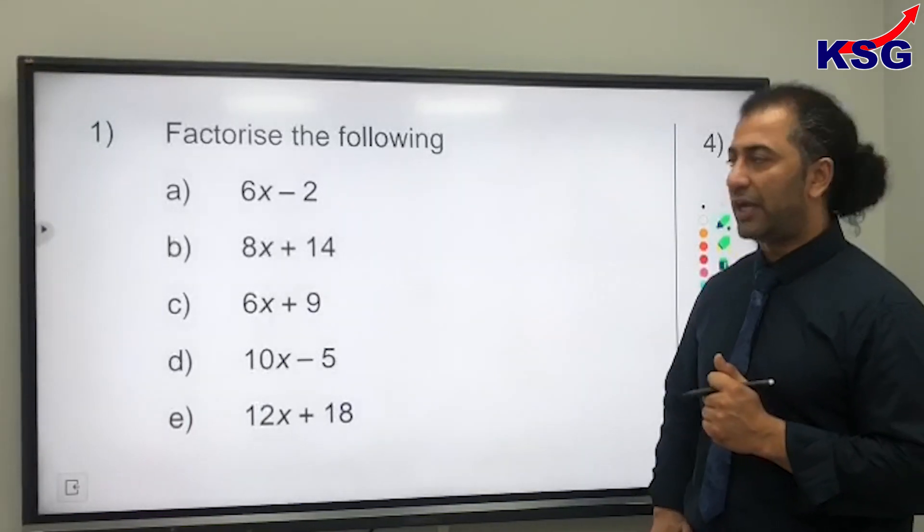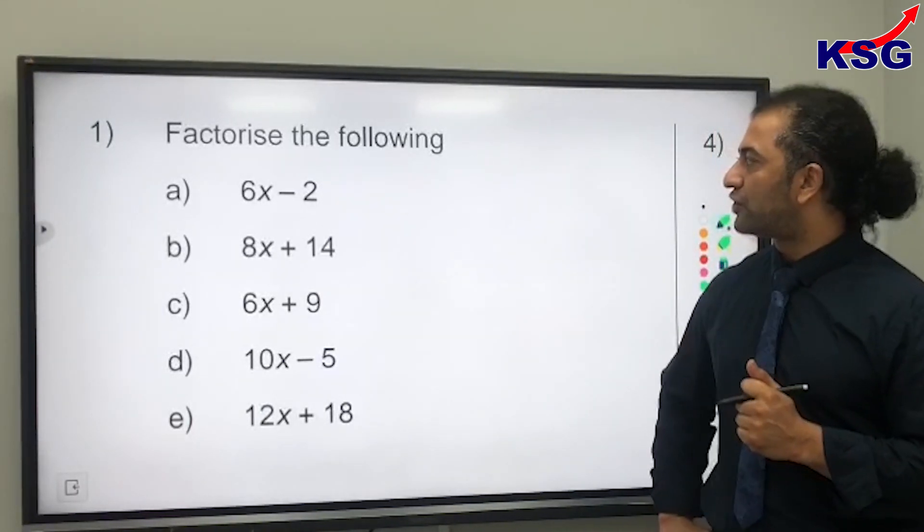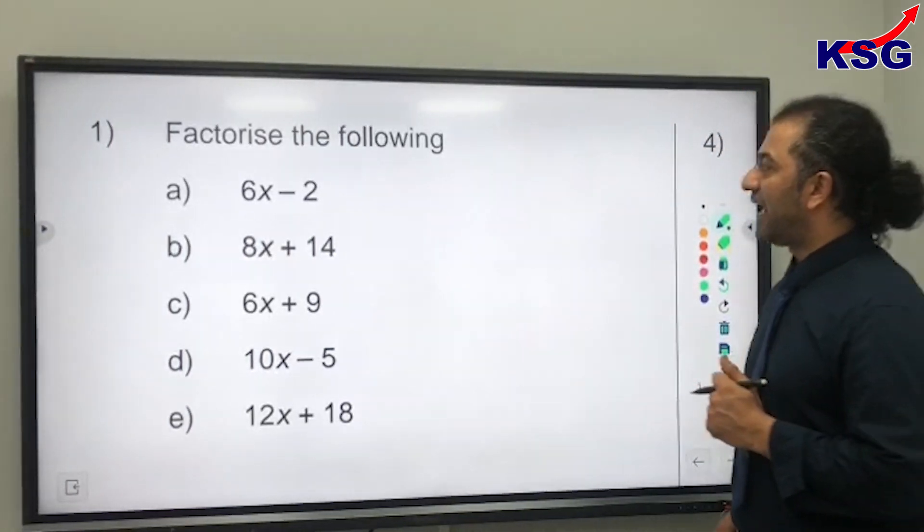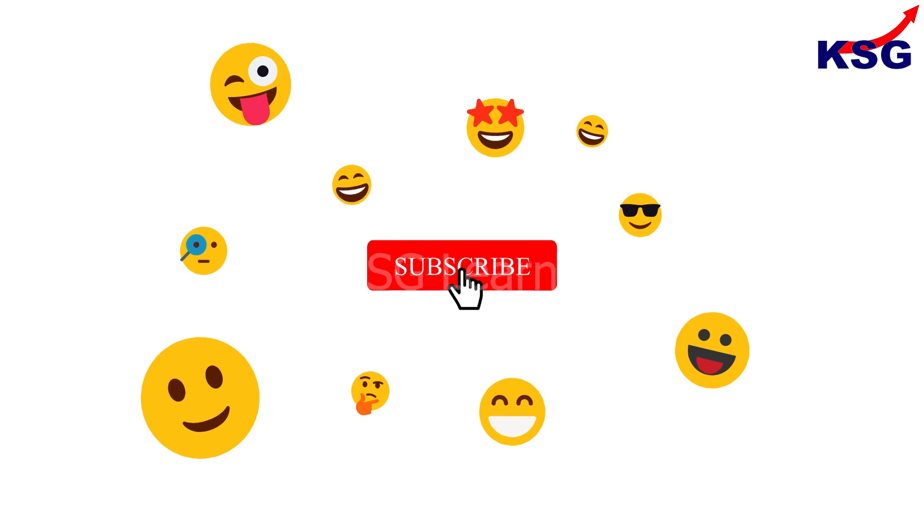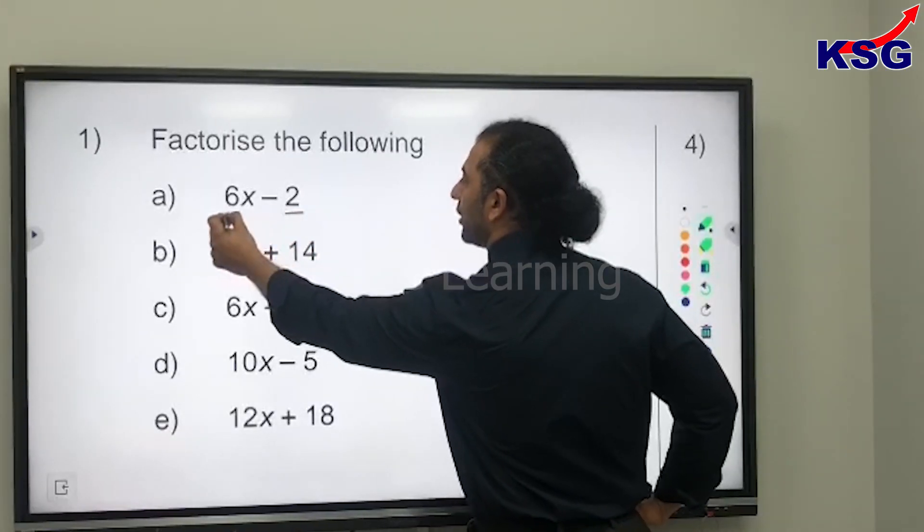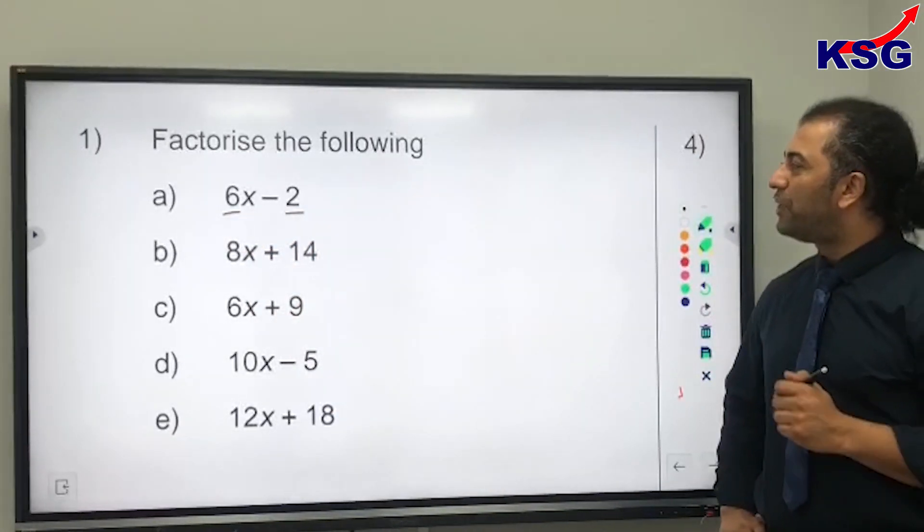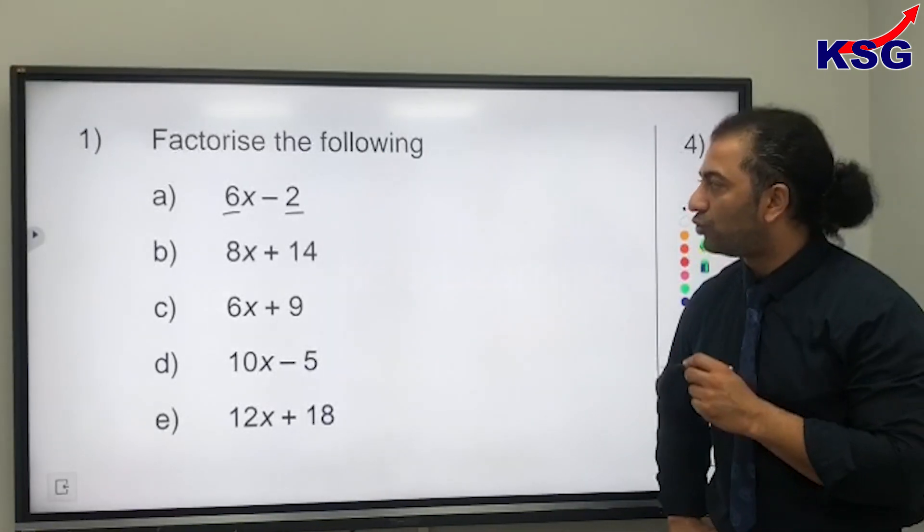First of all, I've got questions up here. Question a: 6x minus 2. What we need to find out between these two numbers, 2 and 6, is what is the biggest number that goes into both?